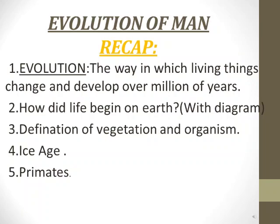Then we also went through the term ice age. Ice age refers to a period when almost the whole earth was covered with deep sheets of ice. We also learned about the climatic changes during the ice age and how animals dependent on particular plants for food had to adjust or adapt to the changing situation. Then I defined the term primates — a member of the most developed and intelligent group of mammals, including humans, monkeys, and apes.